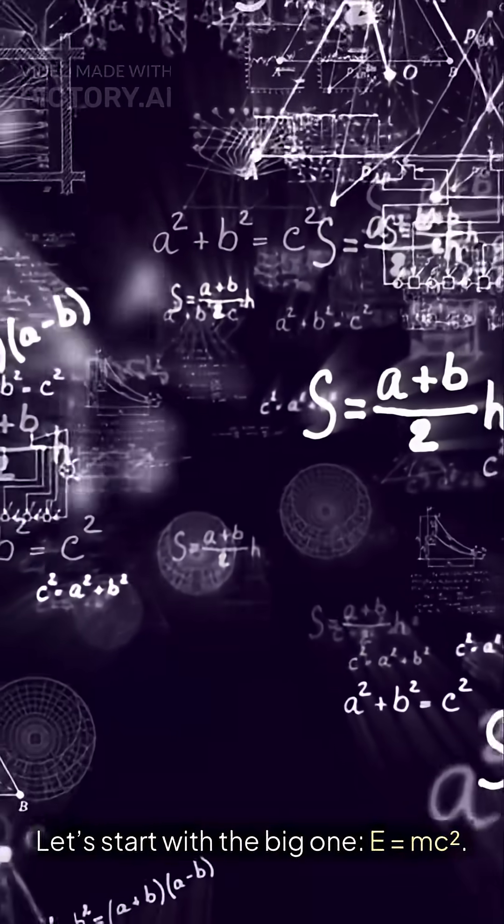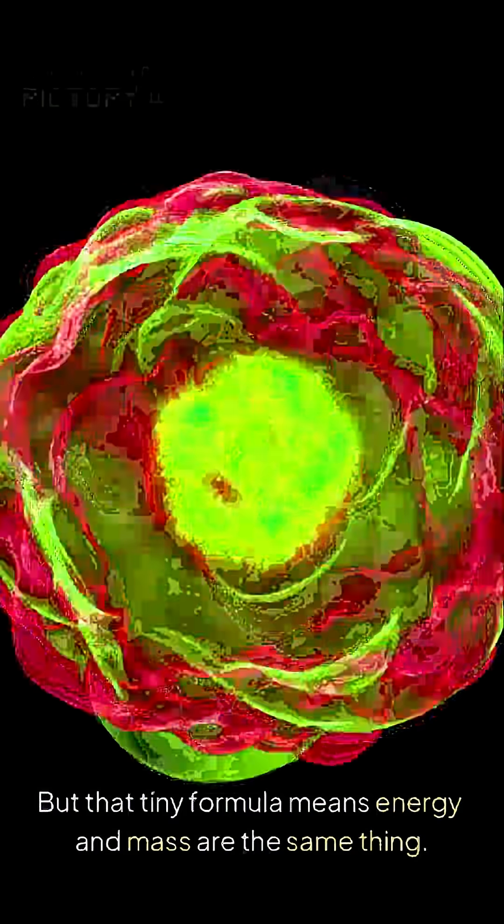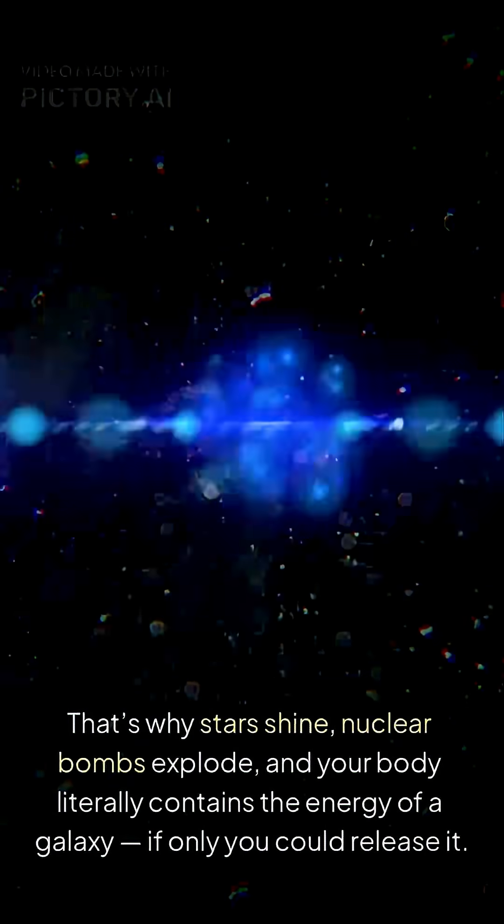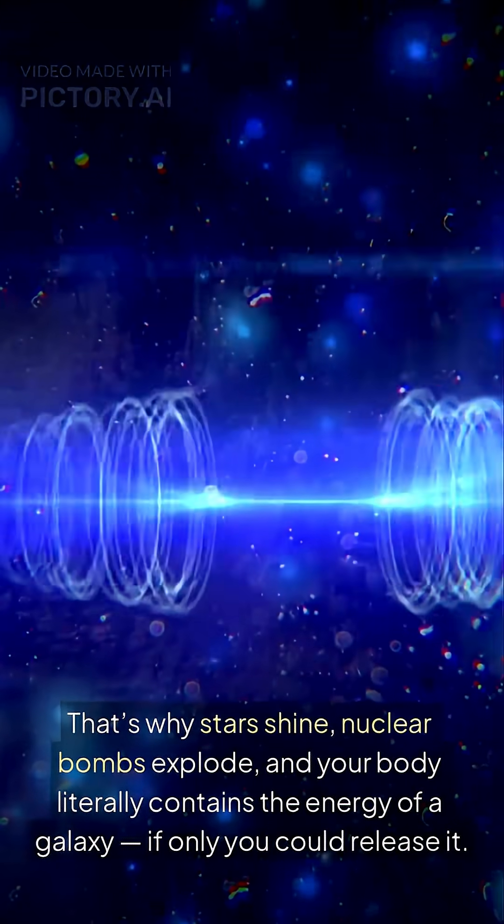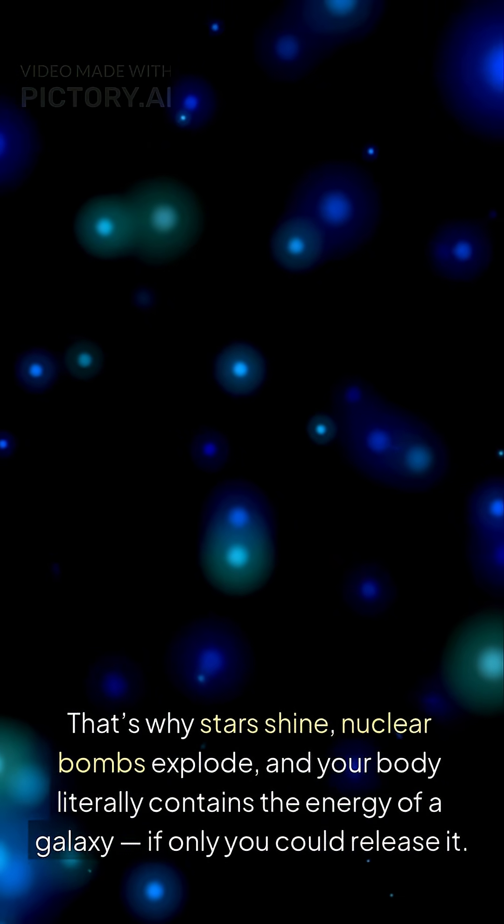Let's start with the big one. E equals mc squared. Sounds simple, right? But that tiny formula means energy and mass are the same thing. That's why stars shine, nuclear bombs explode, and your body literally contains the energy of a galaxy. If only you could release it.